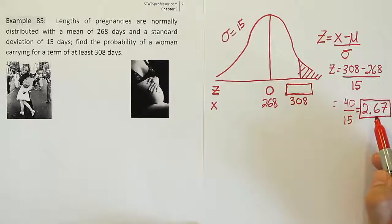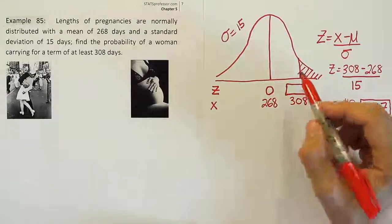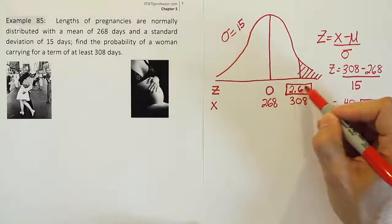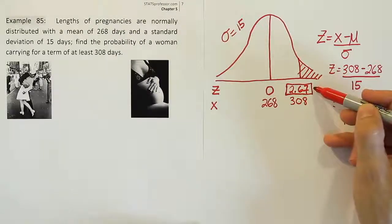So now that we have the 2.67, I'll place that here because that's what this is, right? That's the z-score version of 308.